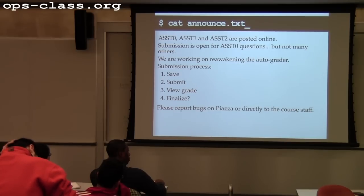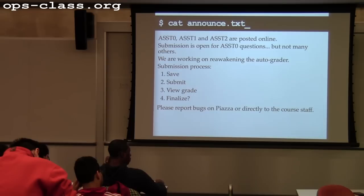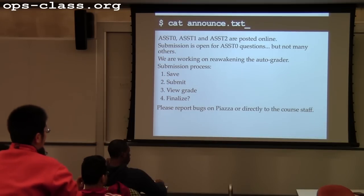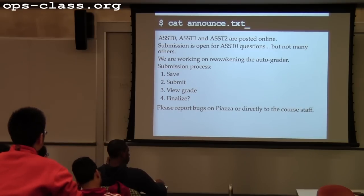For the questions you're asked to submit through the website to get credit for the assignments, there's a multi-step process. First, you can optionally save an answer, which lets you save your work without submitting right away. When you're ready to have your answer graded, you hit the submit button, which either wakes up the autograder or queues it — that process might take a few hours depending on what else is in the queue.